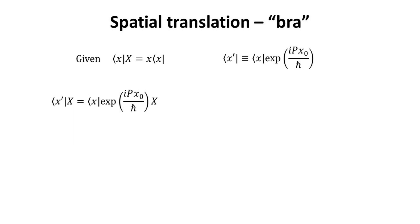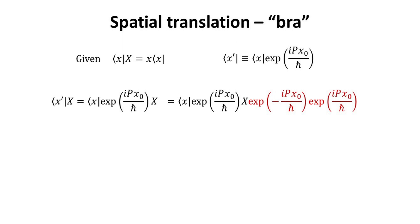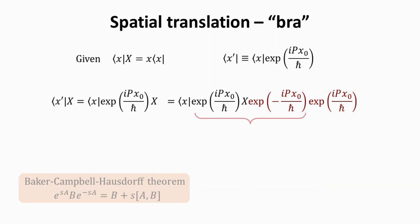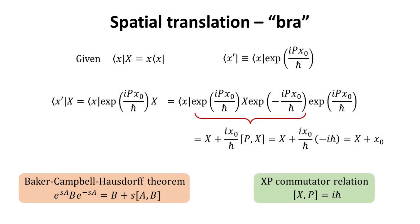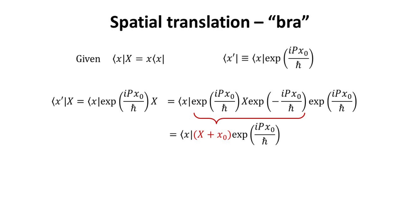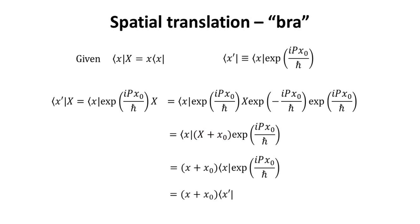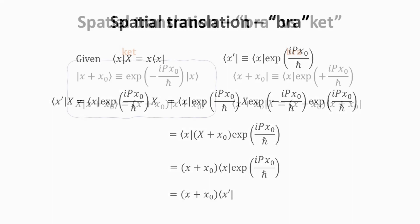Let's operate the bra ⟨x'| with the position operator. I employ the same trick, multiplying on the right with the translation operator and its inverse. Making use again of the Baker-Campbell-Hausdorff theorem, we can rewrite this trio product as the translated version of the position operator. Namely, it transforms the operator x into x plus x_0. Thus, ⟨x'| diagonalizes the position operator x with eigenvalue x plus x_0.